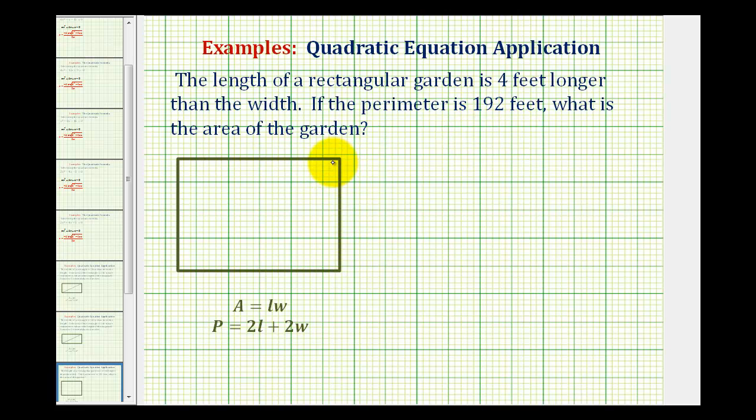Because the length is four feet longer than the width, if we let the width equal x, then the length would be x plus four to represent four feet longer.